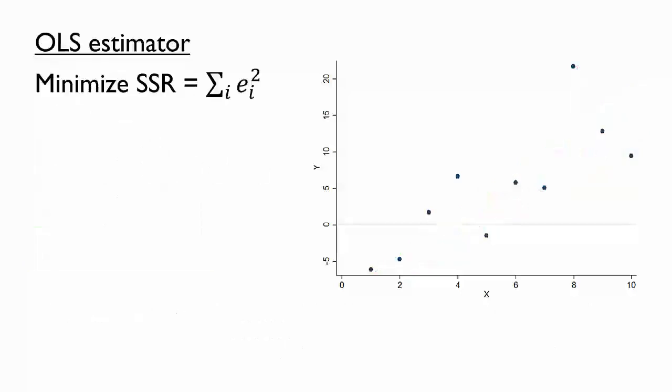If we can agree to choose a best fit line by minimizing the SSR, how exactly do we go about doing that? We could try many different lines, calculate the SSR of each one, and select the line with the lowest SSR, but this would be a time-consuming endeavor.